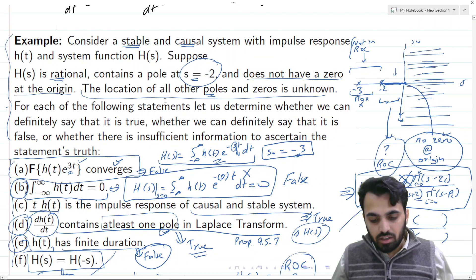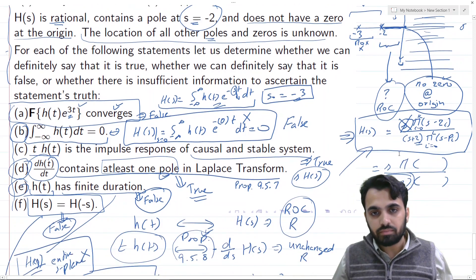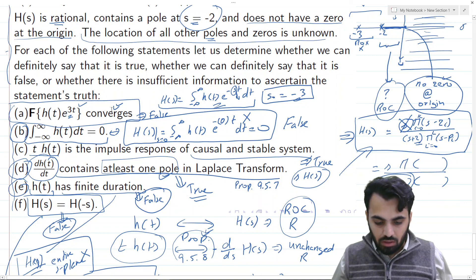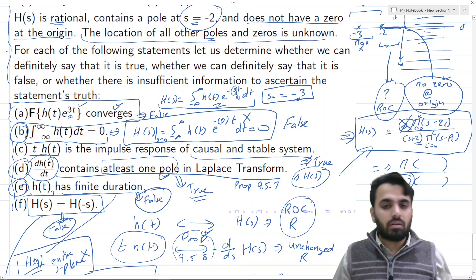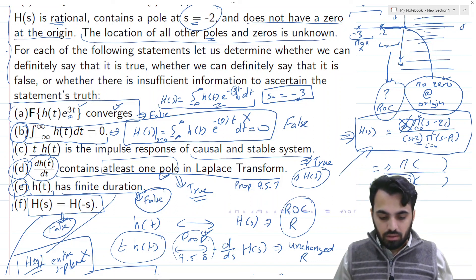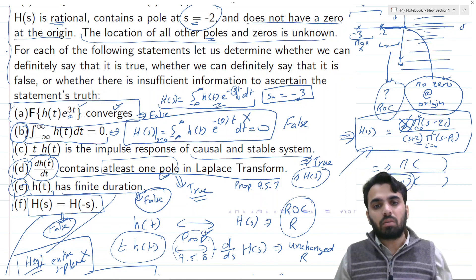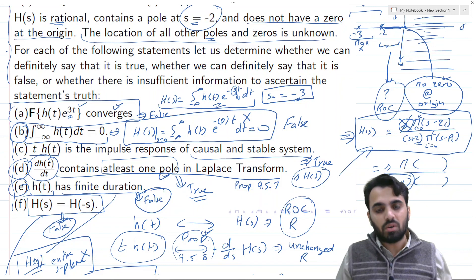Using the s-plane diagram, we constructed a generic transfer function H(s) from the given constraints. Then for each questionnaire (A through F), we either compared with the standard Laplace transform definition or applied a relevant property to determine whether each statement was true or false.